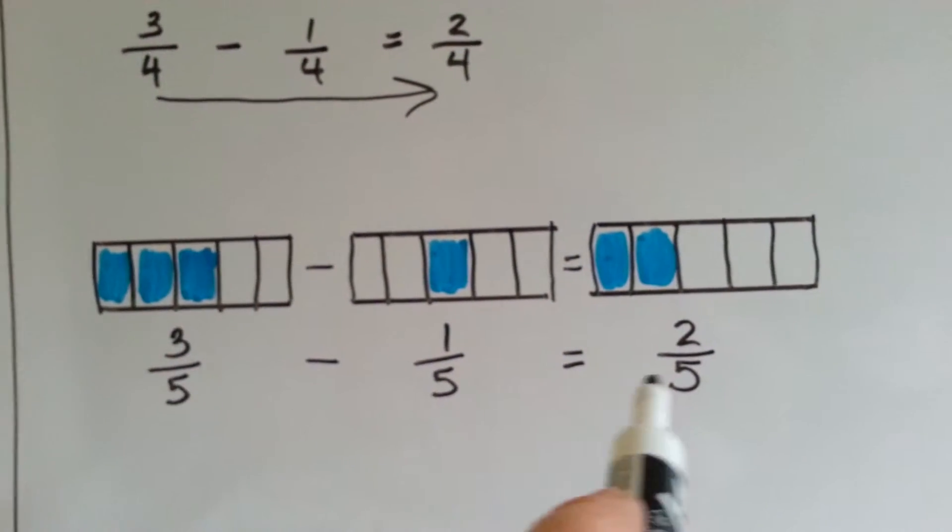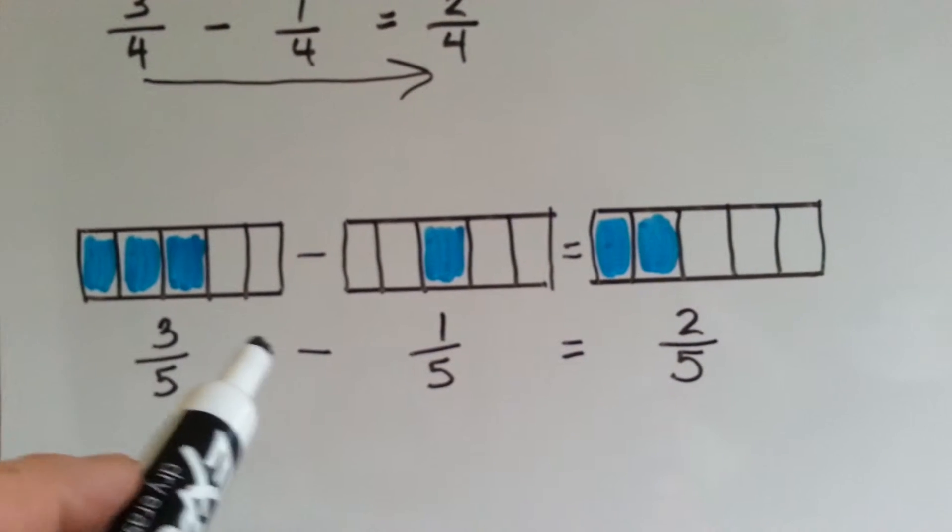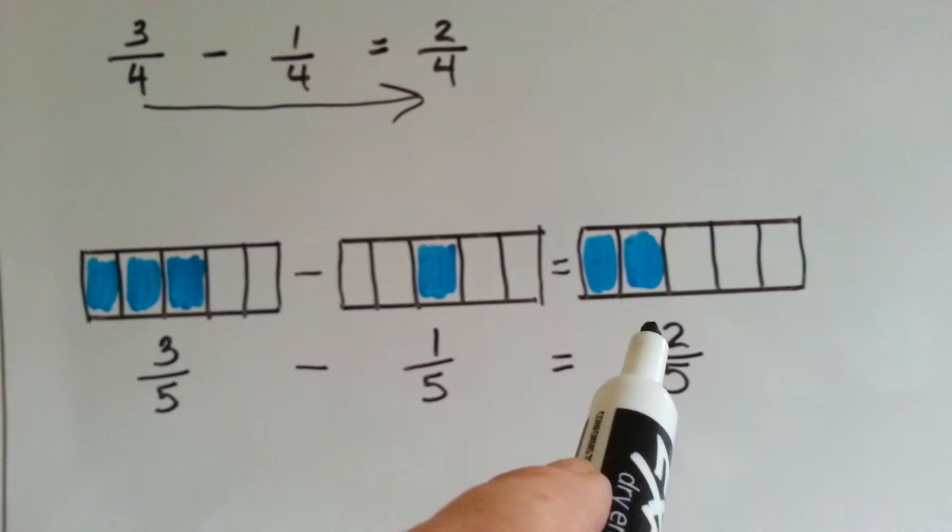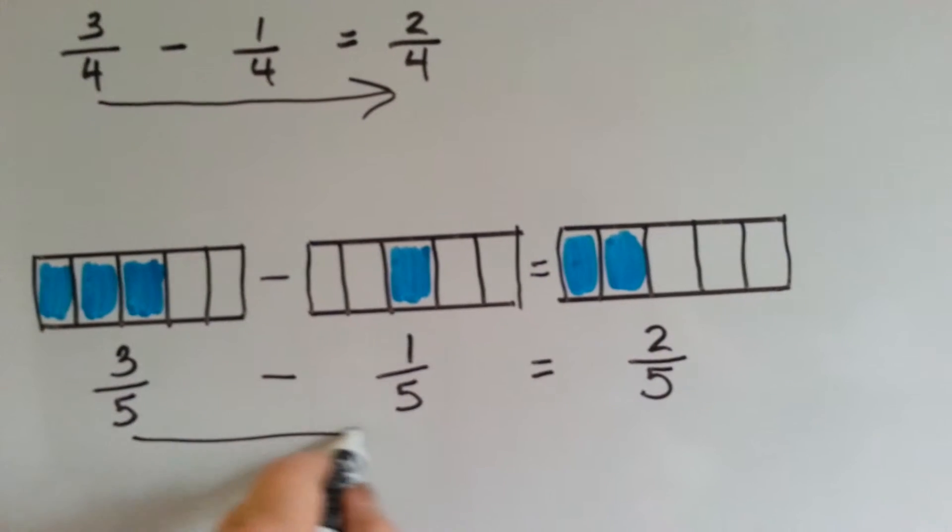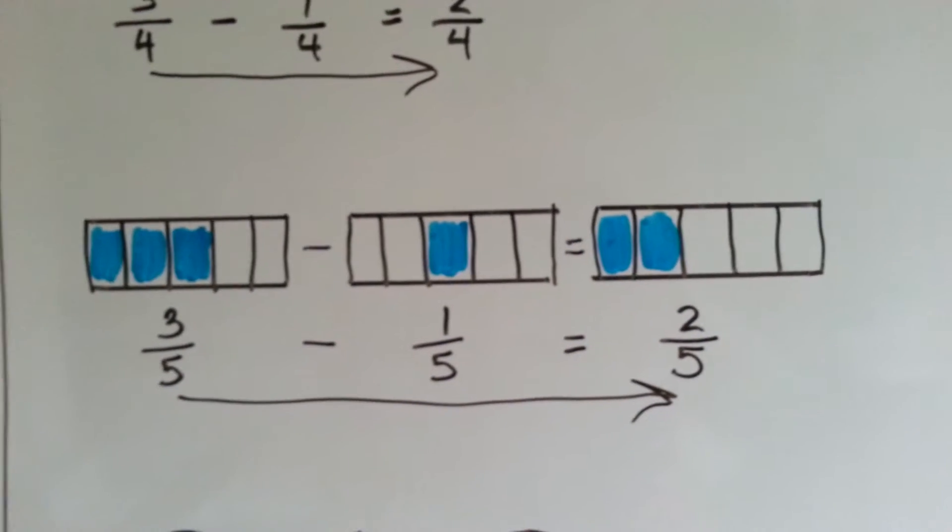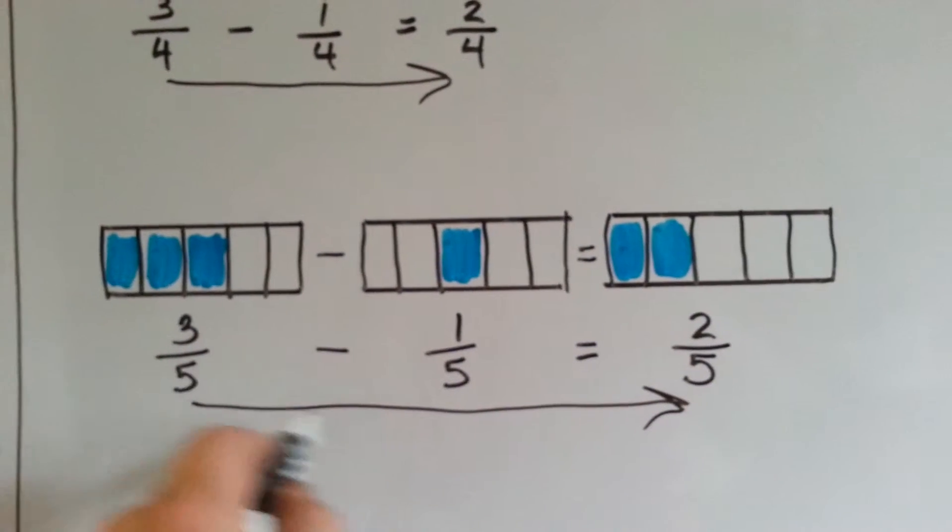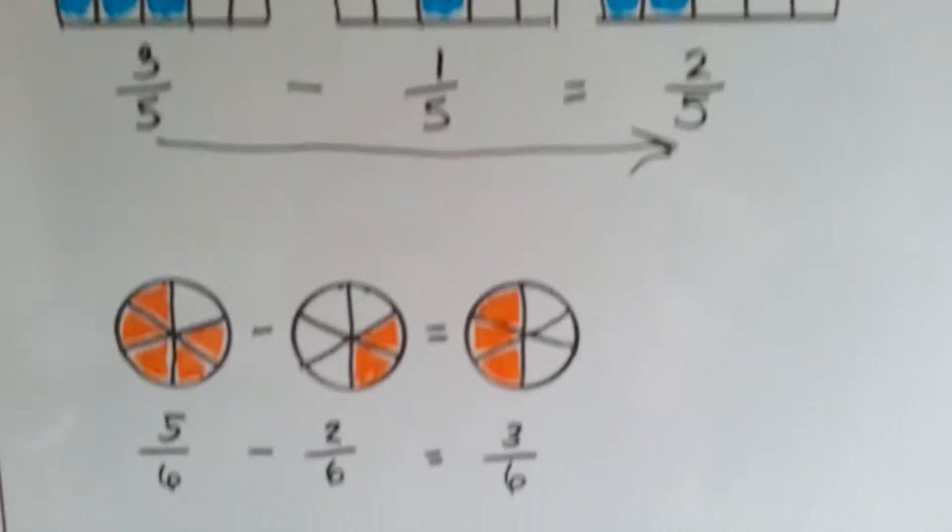So, the denominators are the same, so we do three, take away one equals two, and all we did was slide the denominator across. The five just slid across. Let's look at this one.